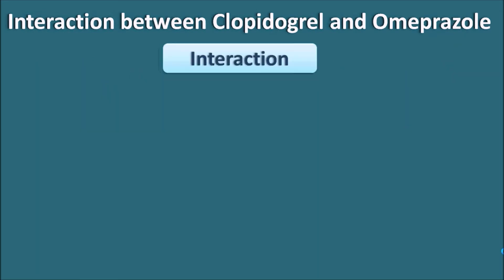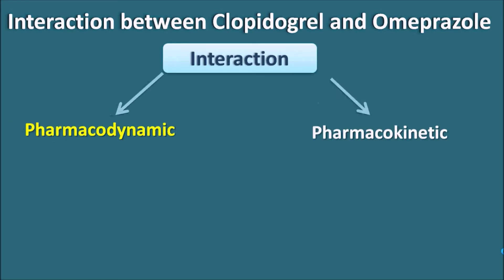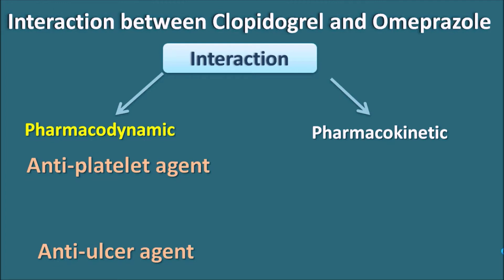The interaction between any two drugs may be of two types: pharmacodynamic interactions and pharmacokinetic interactions. In pharmacodynamic interactions, drugs may interact at the mechanism of action or at therapeutic actions. Here, clopidogrel acts as an anti-platelet agent whereas omeprazole acts as an anti-ulcer agent, so there is no relation between their mechanisms or actions. Therefore, pharmacodynamic interaction is not possible between clopidogrel and omeprazole.